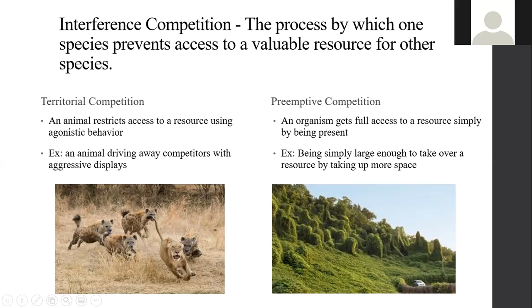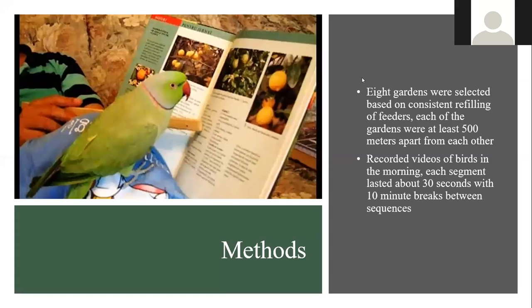These are the methods they used. They chose eight different gardens based on consistent refilling of feeders in yards and parks. Each garden was at least 500 meters apart so parrots couldn't fly between different populations. They would record videos of the birds every morning. The cameras would only activate when birds went in to feed and they lasted about 30 seconds with 10-minute breaks between each sequence.